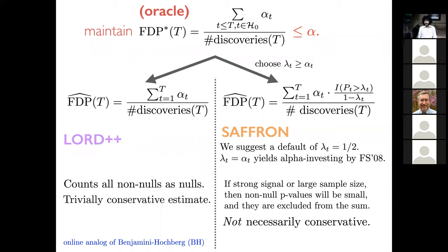If you use Lambda_T equal to Alpha_T itself, you get back alpha investing from Foster and Stein 2008 — that's what alpha investing was implicitly tracking. But half was a much better choice in our experiments. If there are strong signals or large sample sizes, all non-null P-values will be small and excluded from the sum, making this a less conservative estimate.